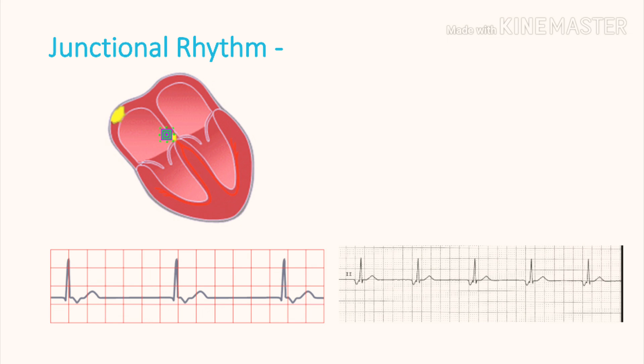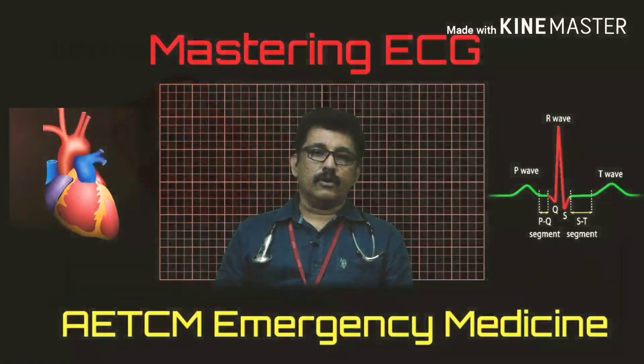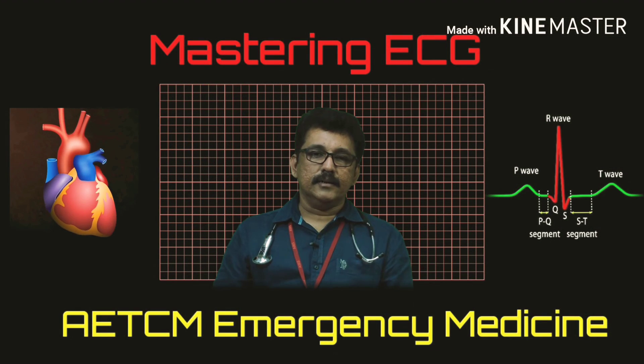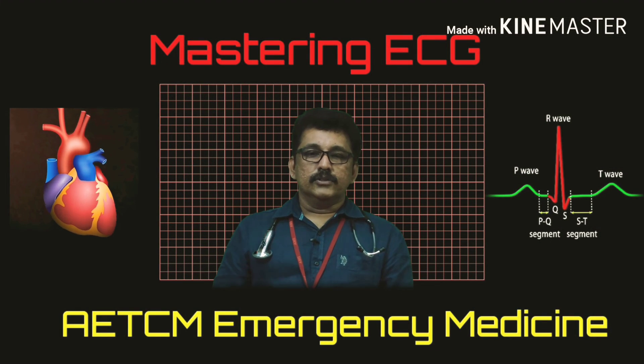Normally the junction has a heart rate of around 60 beats per minute. Sometimes you can get tachycardia — then you call it junctional tachycardia.